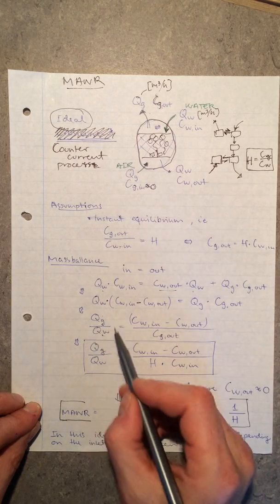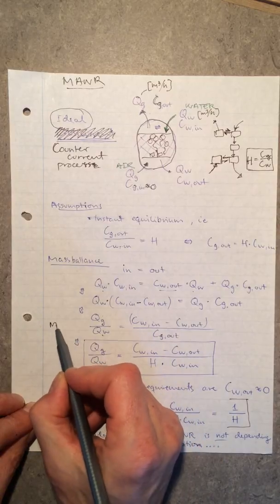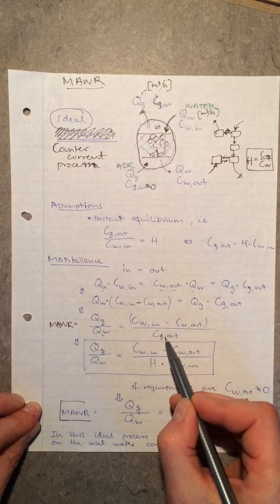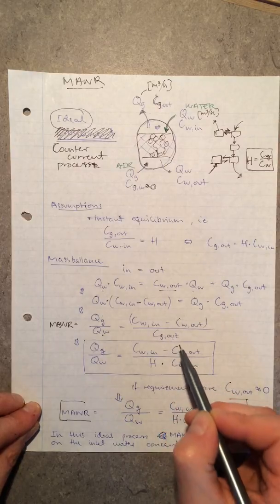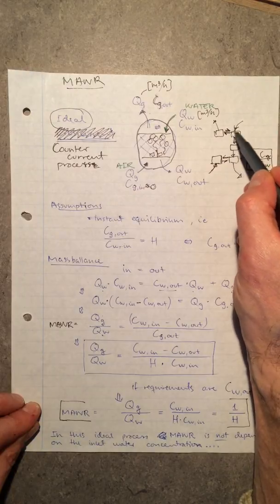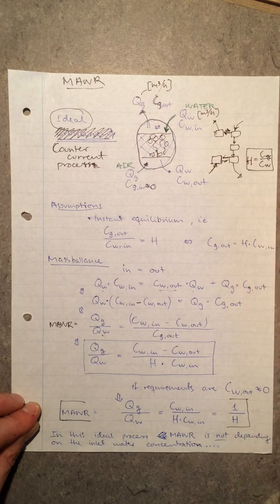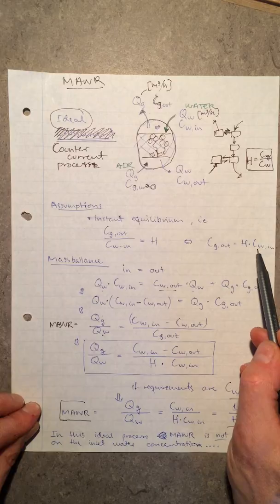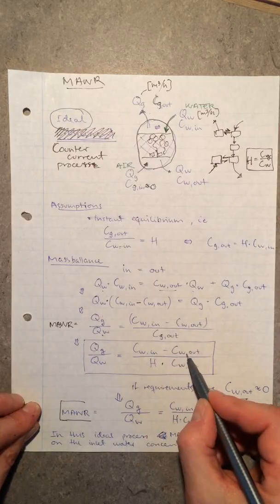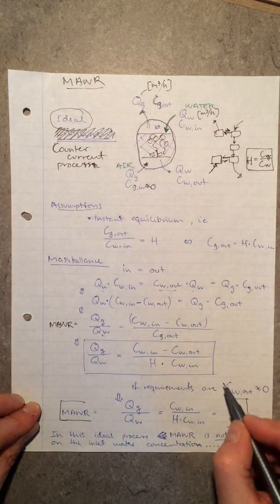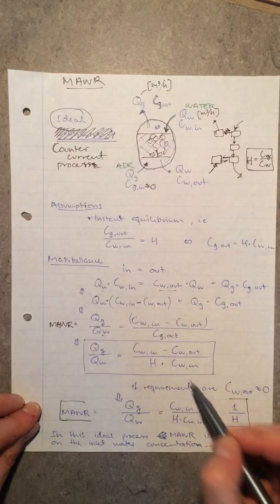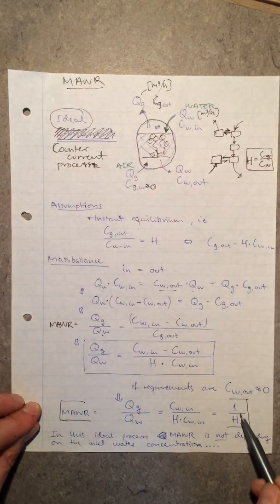I can divide through and get my minimum air-to-water ratio expressed as the concentration of substance in the water coming in minus the concentration going out, divided by the concentration of substance in the gas going out. Now, applying Henry's constant and the equilibrium assumption, I can substitute the gas concentration with Henry's constant times the concentration in the water coming in. If my stripping process is efficient, the concentration in the outgoing water is close to zero, so that term drops out.